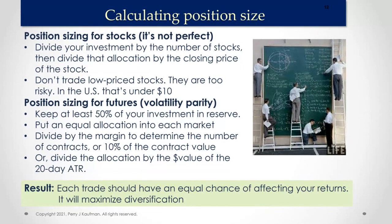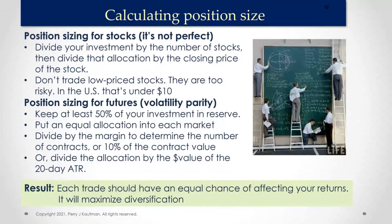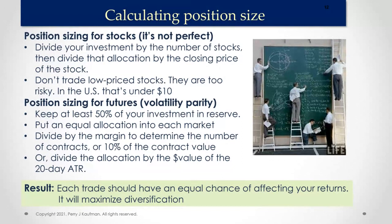For futures, keep 50% of your investment in reserve, then put an equal allocation into each market. You do that by dividing the allocation by the dollar value of the average true range, or dividing the allocation by the margin. The point is to get an equal amount of risk in every trade.